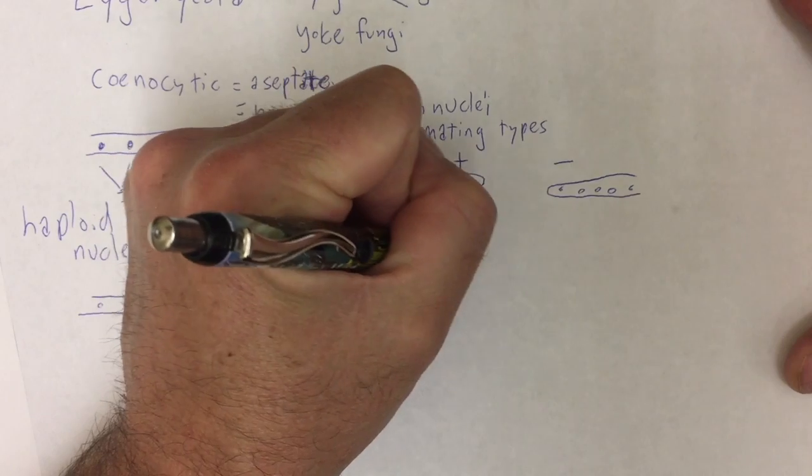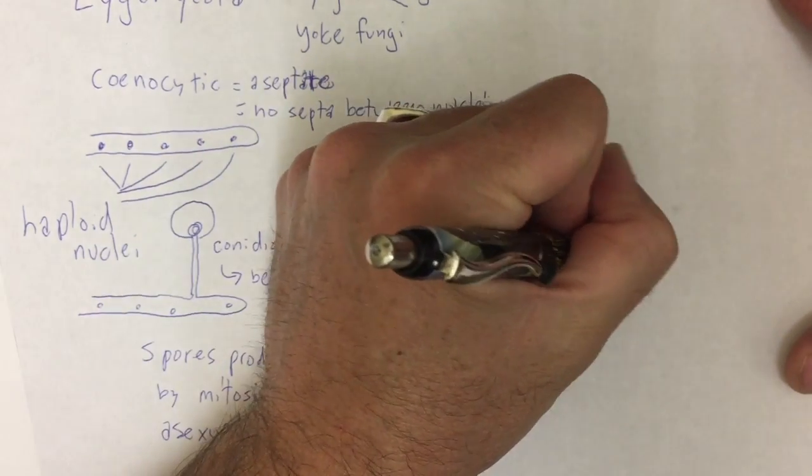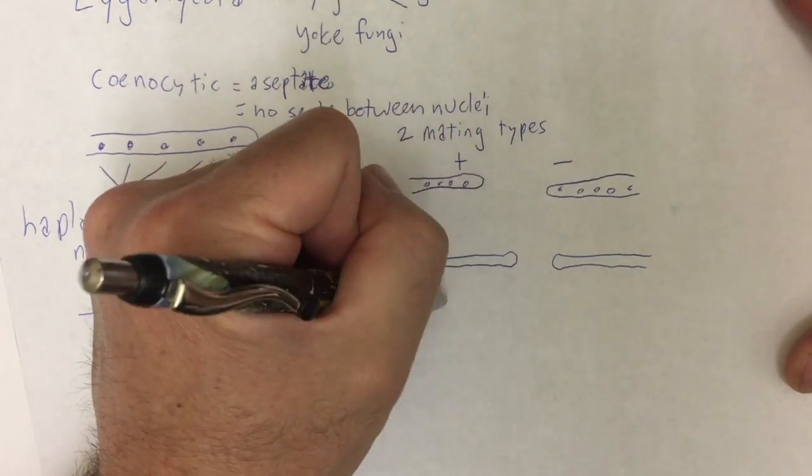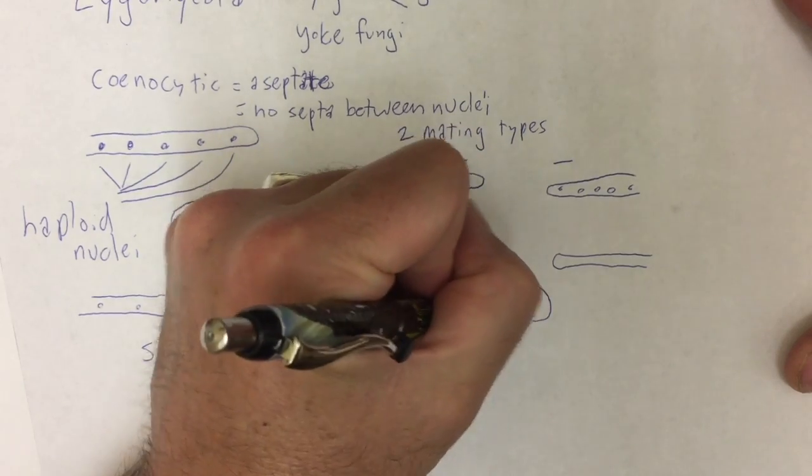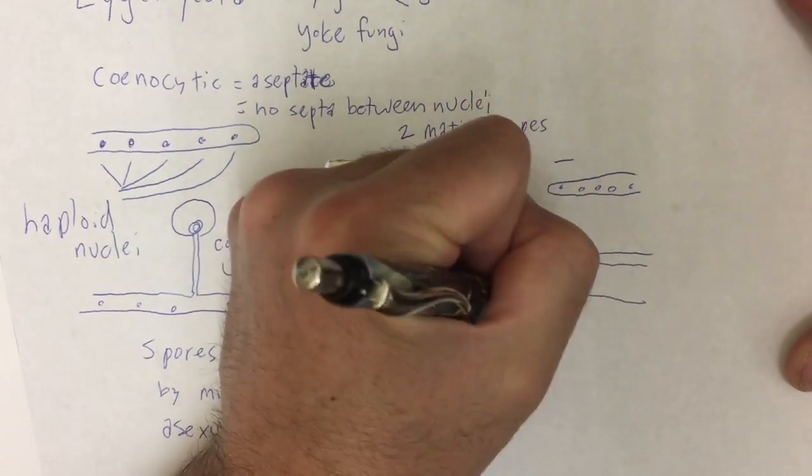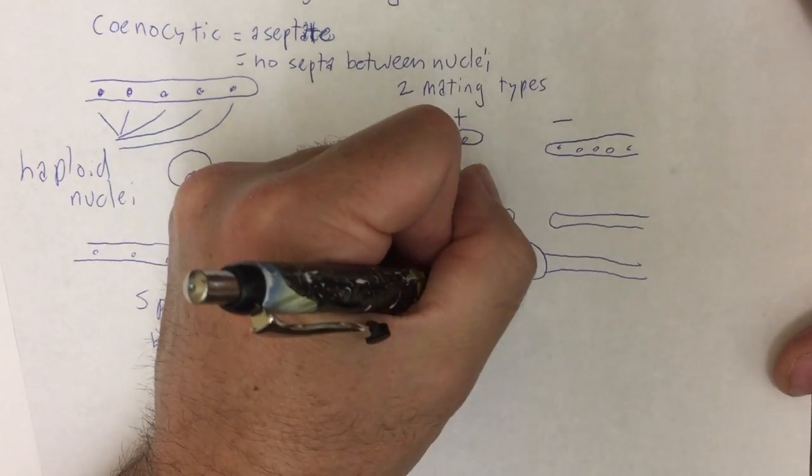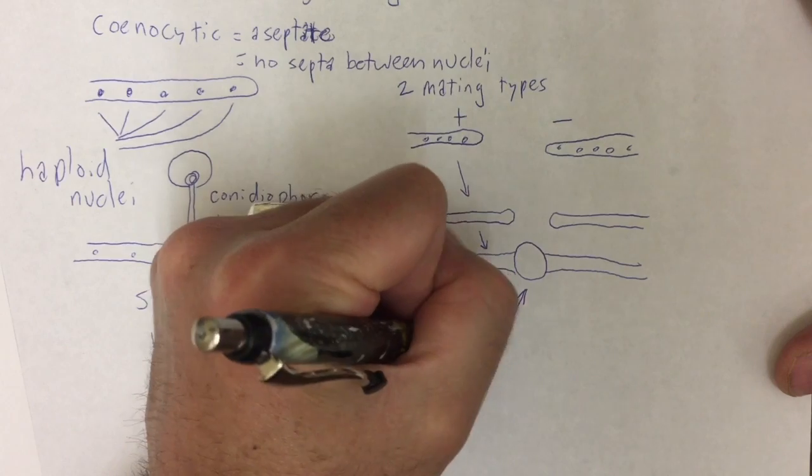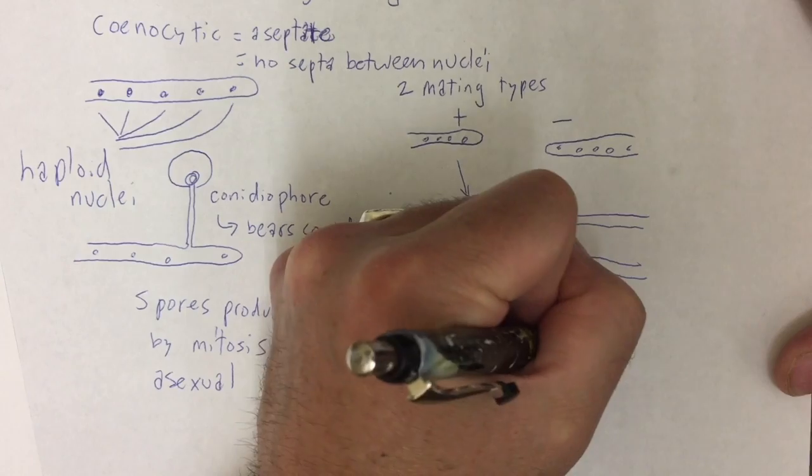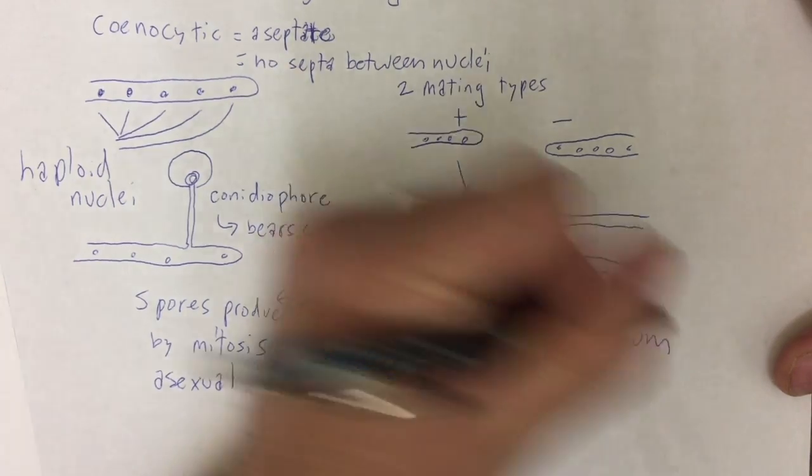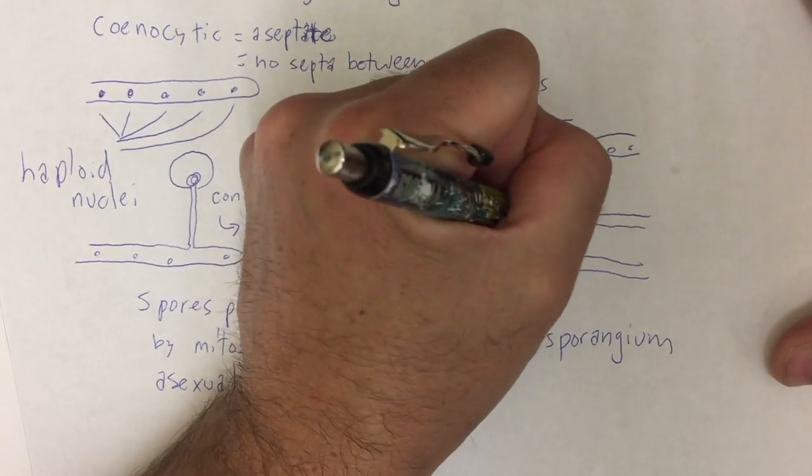So two of these hyphae may grow close to each other, and they're going to produce a structure between them that's called a zygosporangium. This is going to be the plasmogamy part.